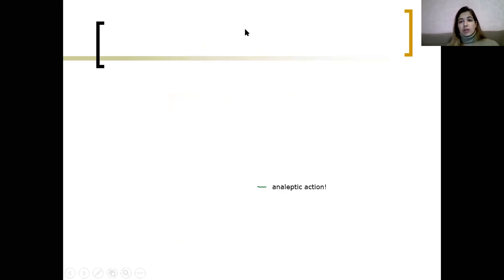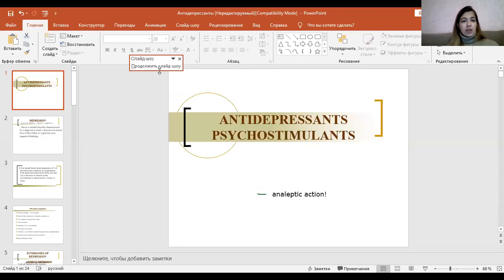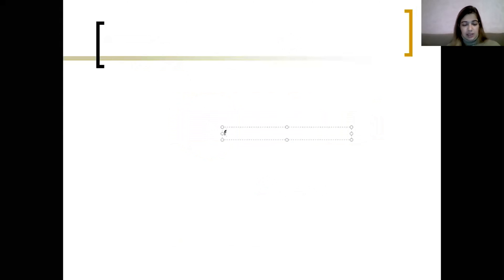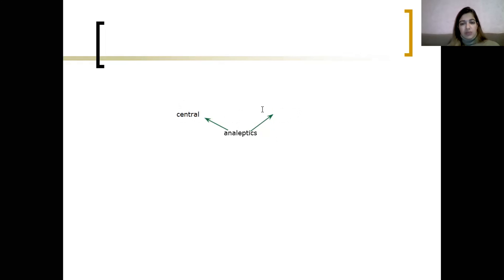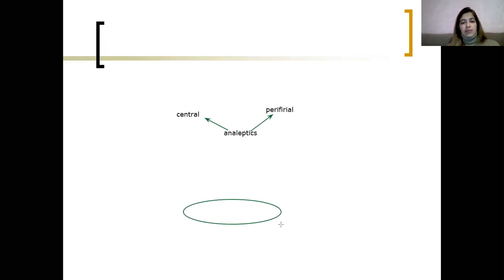Now about analeptics. We have another group: analeptics, which are classified into central and peripheral analeptics. Central analeptics — what do they do? In general, analeptics are used to stimulate the centers of the medulla oblongata.